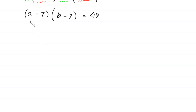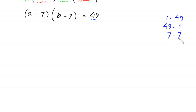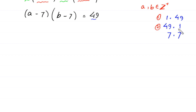Now we have two factors on the left side, and 49 can be factorized as 1 times 49, 49 times 1, and 7 times 7. So we must solve these three cases: Case 1 is 1 times 49, Case 2 is 49 times 1, and Case 3 is 7 times 7.